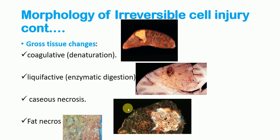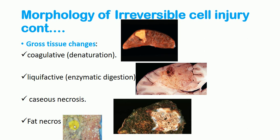Another gross tissue change in irreversible cell injury is caseous necrosis, which is common in TB lungs. As shown, this is an area of caseous necrosis in the lung. There is also fatty necrosis, manifested by white chalk-like deposits in the pancreas, seen in someone who has had acute pancreatitis — this is called fatty necrosis.